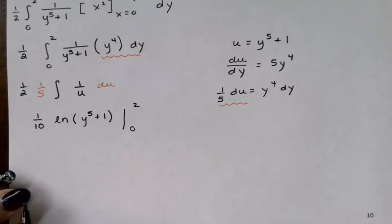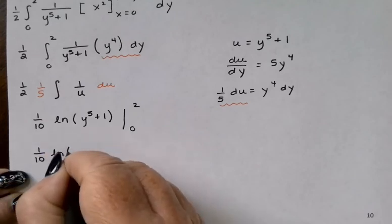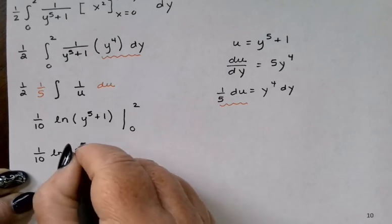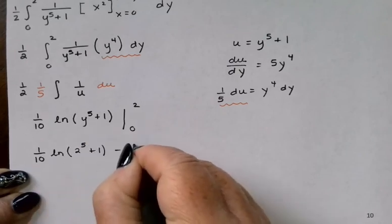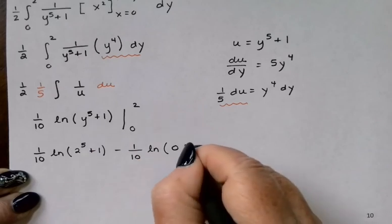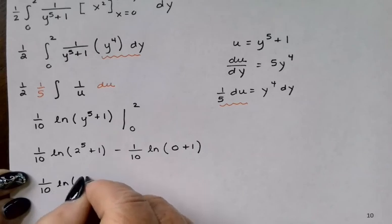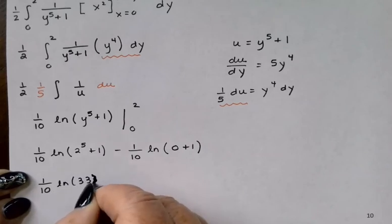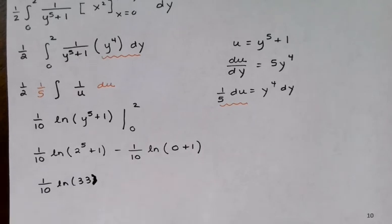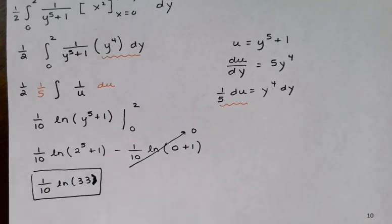So I've got 1 tenth times the natural log of 2 to the fifth plus 1 minus 1 tenth times the natural log of 0 plus 1. That would be 1 tenth times the natural log of 33. Oops, not 333, just 33. And then the natural log of 1 is 0. So that whole second term is going to become 0. And I actually have an exact answer here. Again, I won't generally do them all the way by hand, but didn't think it was bad to review that process once in a while.